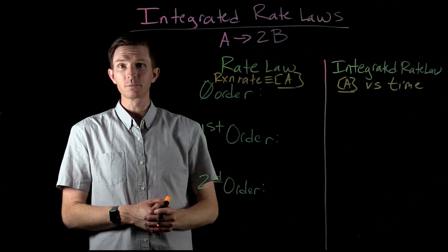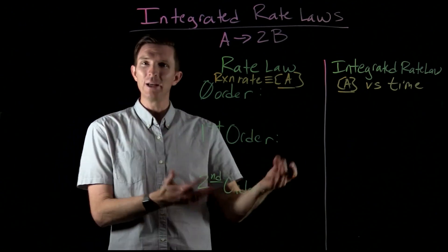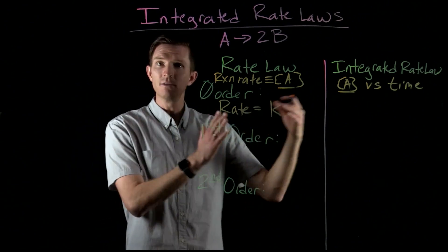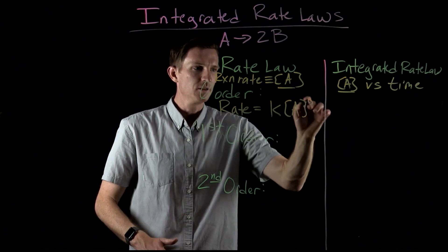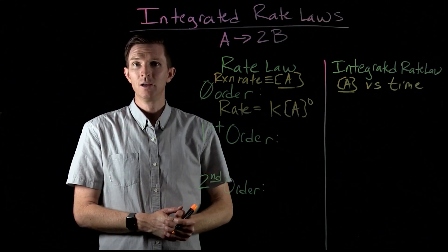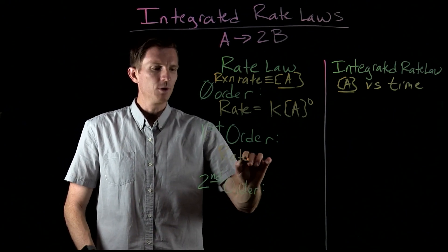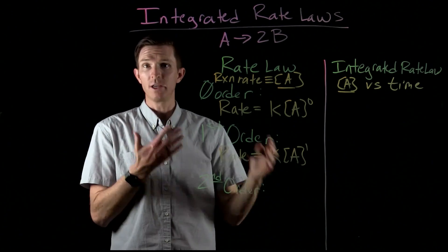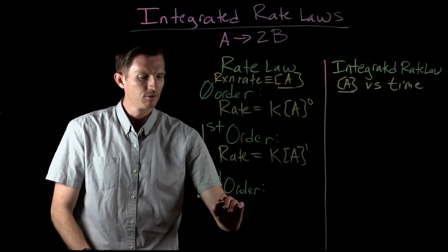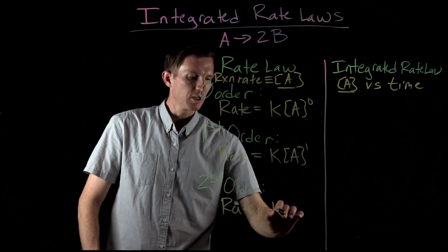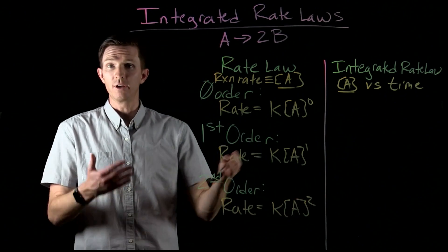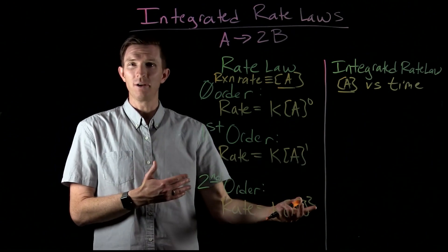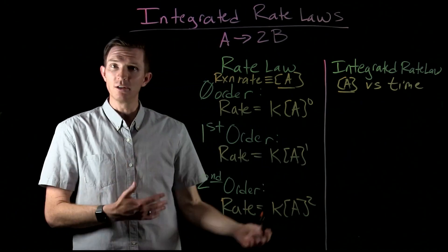We're going to look at three possible orders. Zero order means the rate is independent of the concentration of A, so rate equals K, or K times A to the zero, which is one. First order: rate equals K times A to the first power — if we cut the concentration of A in half, the rate cuts in half. Second order: rate equals K times A squared — if we cut the concentration of A in half, the rate will be one-fourth as fast. Because the rates are affected by concentration differently, the way concentration changes over time will differ as well.